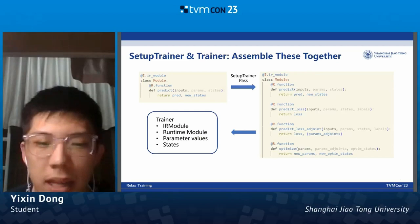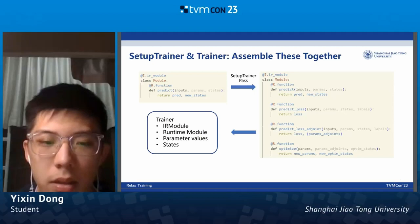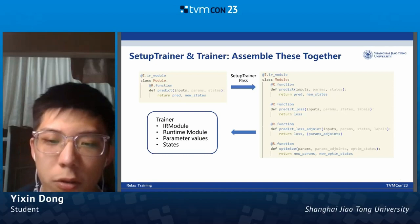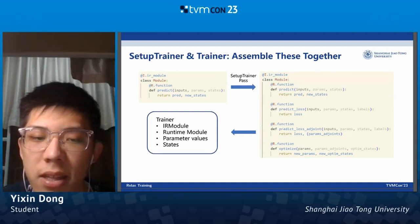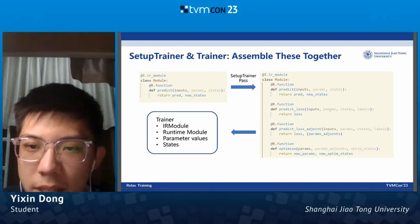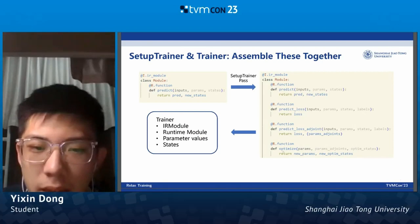Finally, let's introduce the setup_trainer and trainer utilities. This encapsulates everything we've mentioned and provides a convenient way to train given models. The setup_trainer is a path that receives a backbone IR module and uses the AD path, the optimizer, and the loss function to transform it into a complete IR module containing all computations needed in the training process. It has a predict function, a predict_loss function that accepts inputs, parameters, states, and labels and returns the loss, a predict_loss_adjoint function that also returns the adjoint of the parameters, and an optimize function that updates the parameters using the provided adjoints.